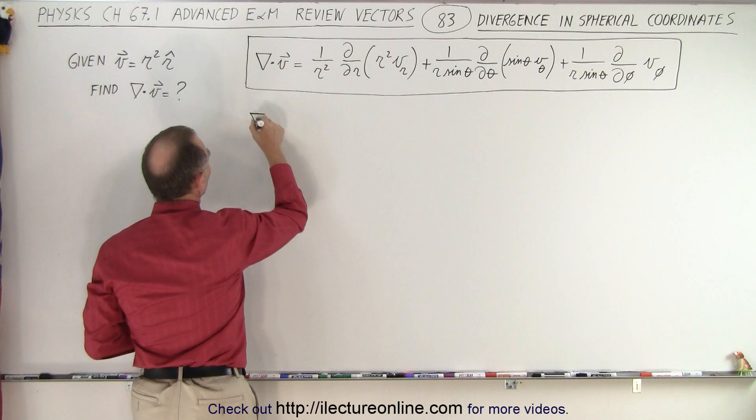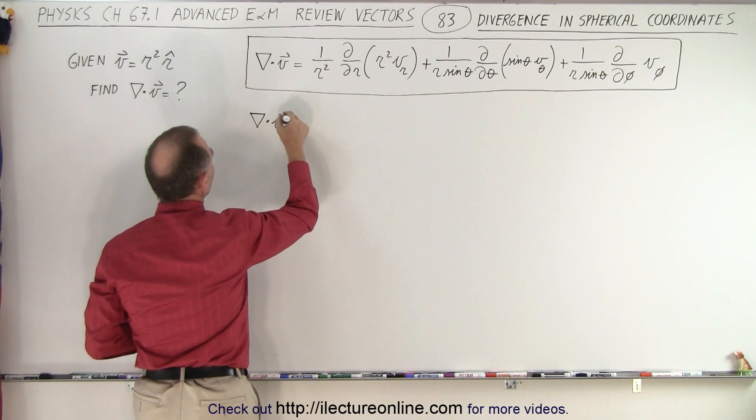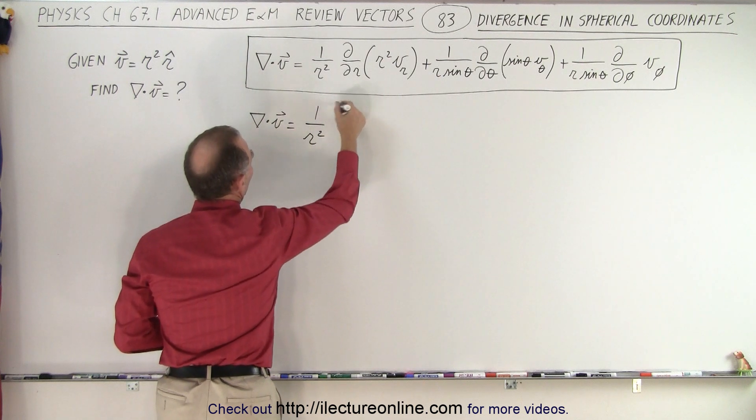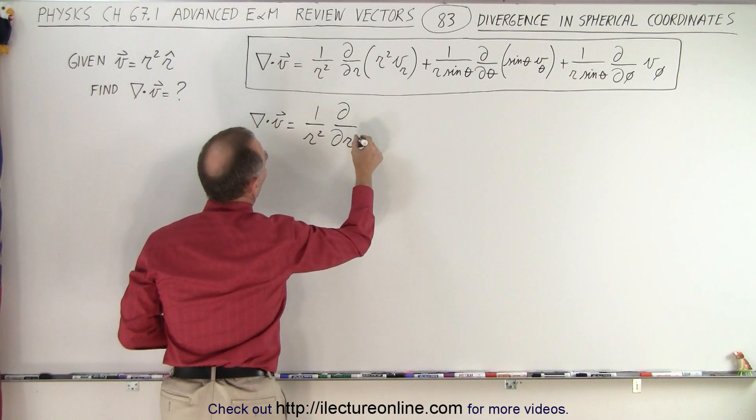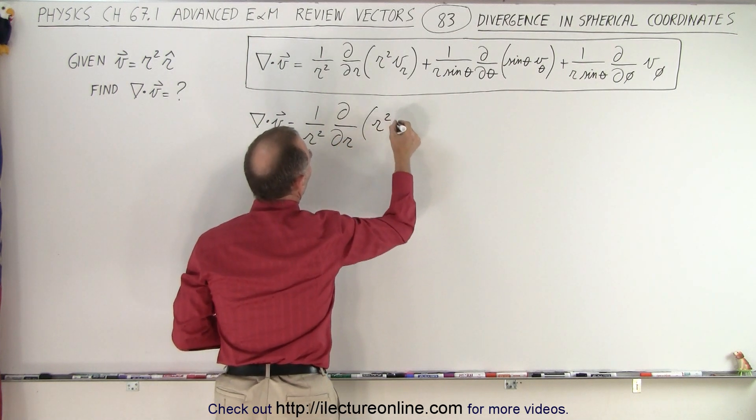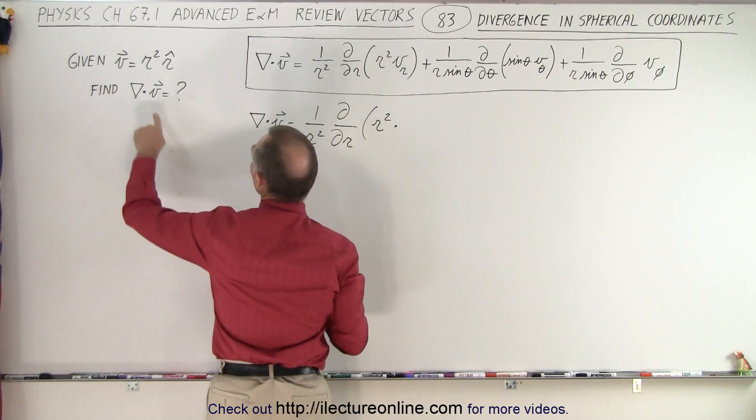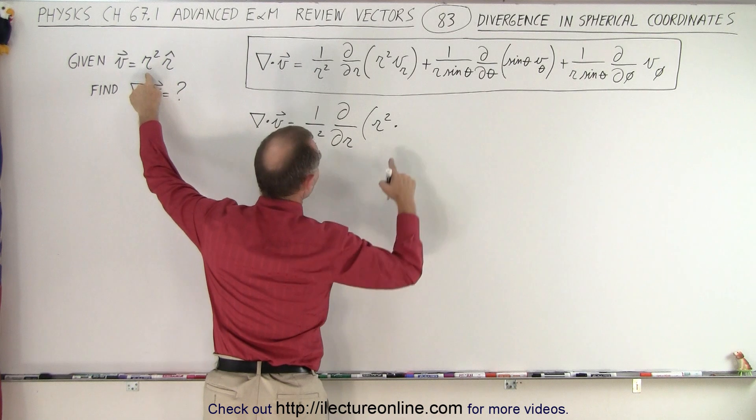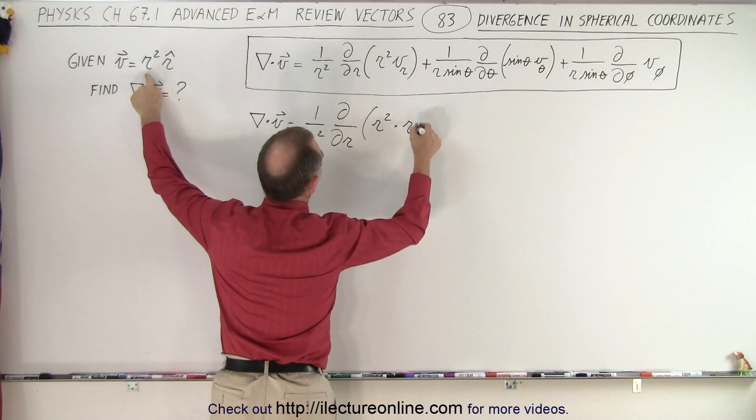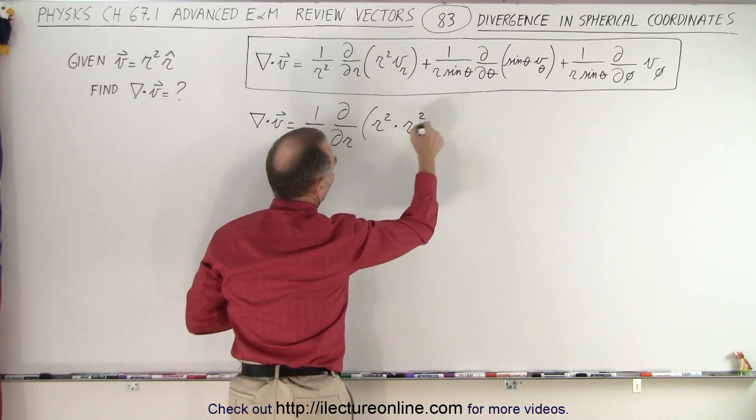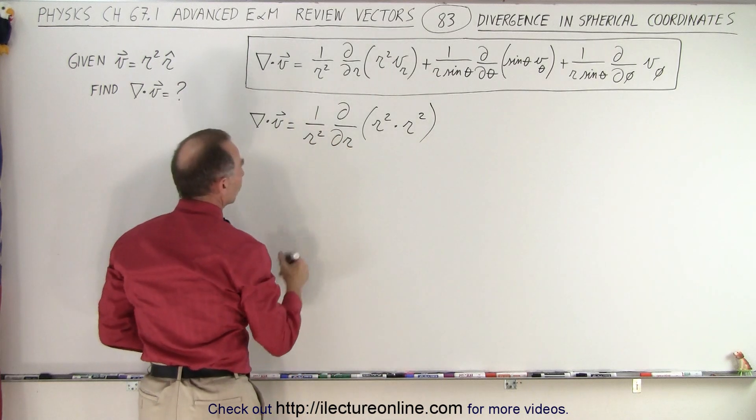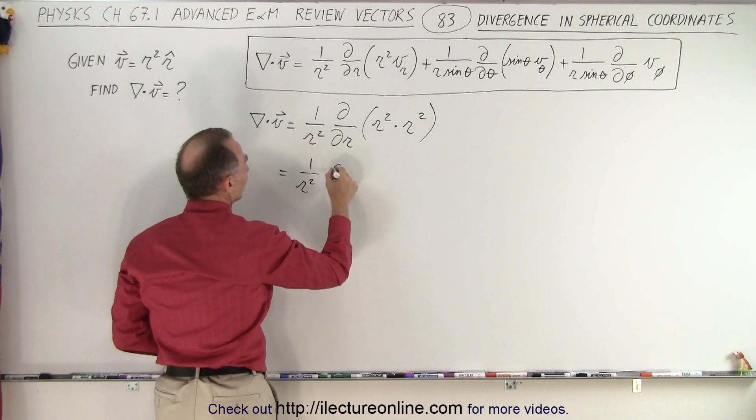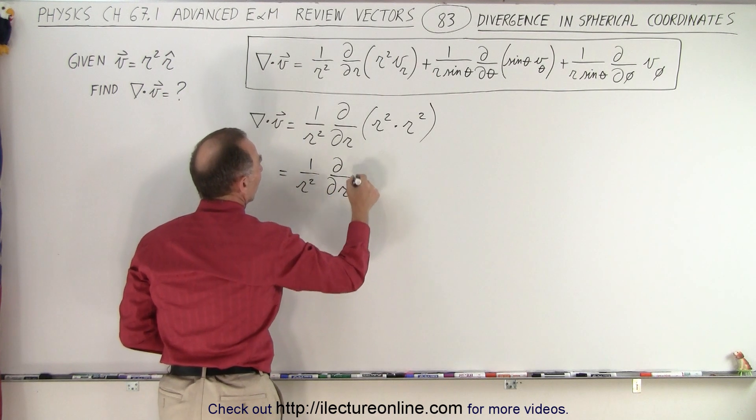So in this case, the divergence of the vector V is equal to 1 over r² times the partial derivative with respect to r of r² times V sub r. Now that's the r component of V, which is simply r². Notice that's not the dot product. That's simply a multiplication. So that means that this is equal to 1 over r² times the partial derivative with respect to r of r to the fourth power.